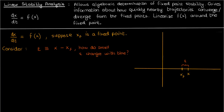You can imagine that if these perturbations grow with time, then the particle's position diverges from the fixed point, which means that the fixed point x_f is unstable. However, if those perturbations decay with time, then the particle's position converges to the fixed point, which means that x_f is stable. So let's take the time derivative of the perturbation epsilon to find out how it changes with time.